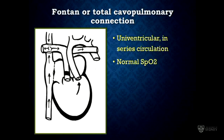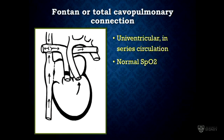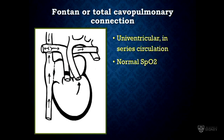Looking at the Fontan first: this is a univentricular in-series circulation without any significant shunting. These patients should operate at a normal saturation, but they often don't — often operating in the low 90s, which is multifactorial. However, if their baseline saturation in room air is lower than 90%, you really need to search for why, because it's not normal for this circulation and makes you quite worried about how vulnerable this patient is going to be.